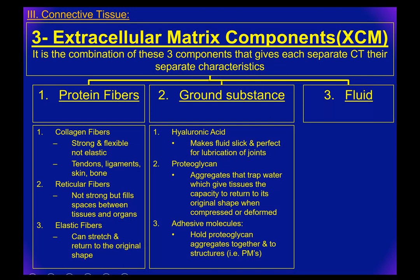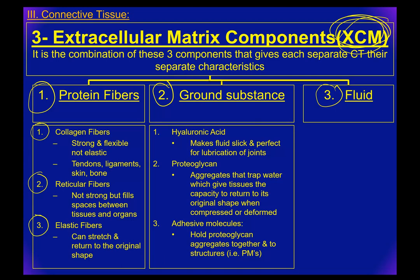Let's talk about the extracellular matrix. It's a combination of three components, and each connective tissue has its own characteristics based on the recipe used to put them together. The three components are protein fibers, ground substance, and fluid. For protein fibers, we have three types: collagen, reticular, and elastic. Collagen fibers are very strong and flexible, but they are not elastic — think of a computer cord that you can bend and yank on, strong and flexible but it doesn't stretch and snap back.